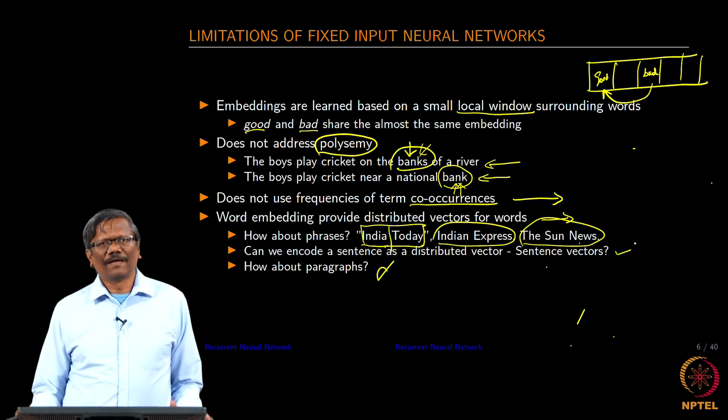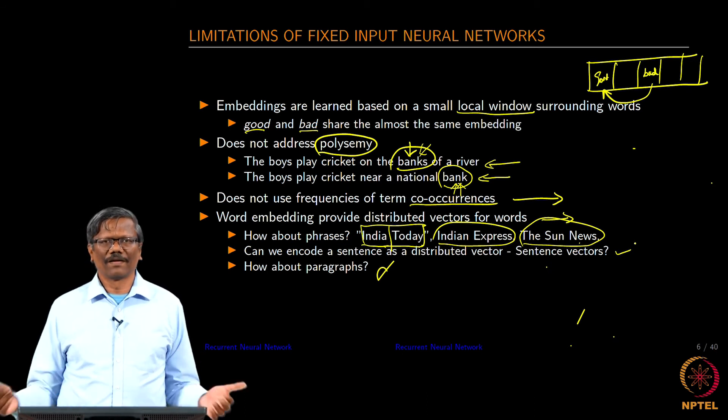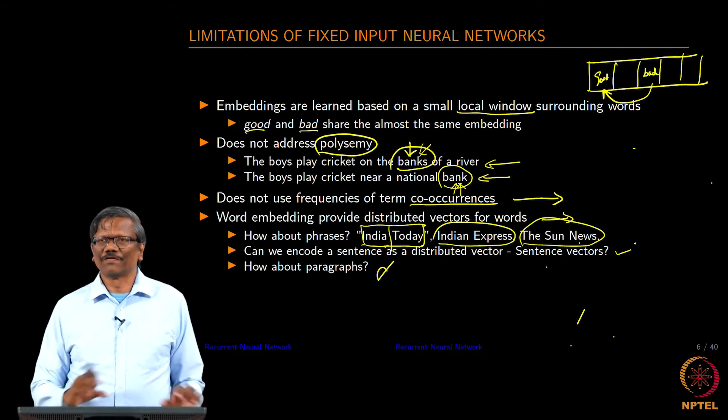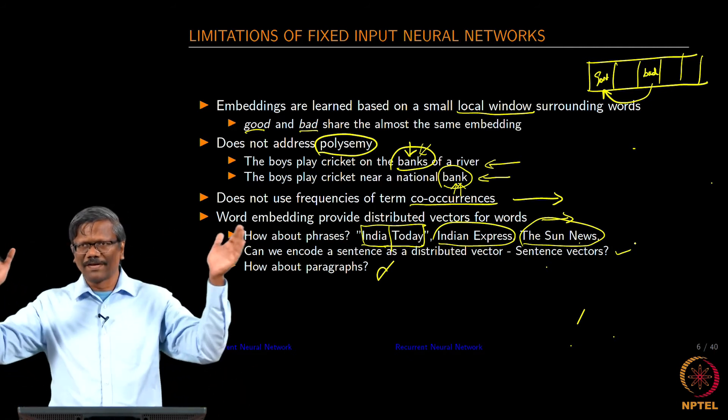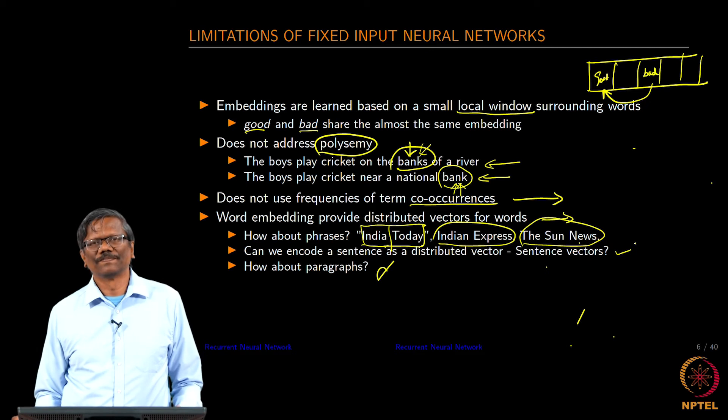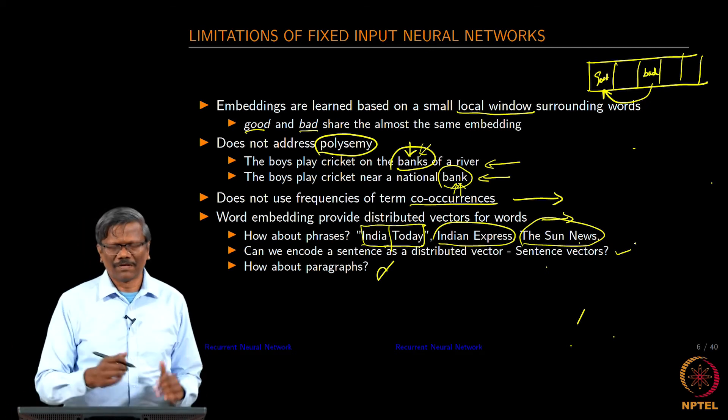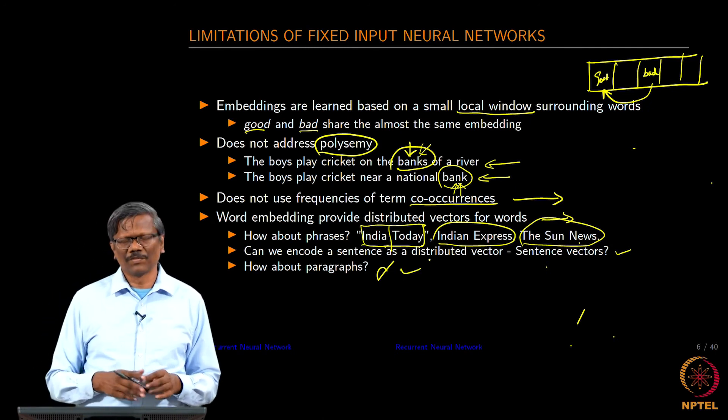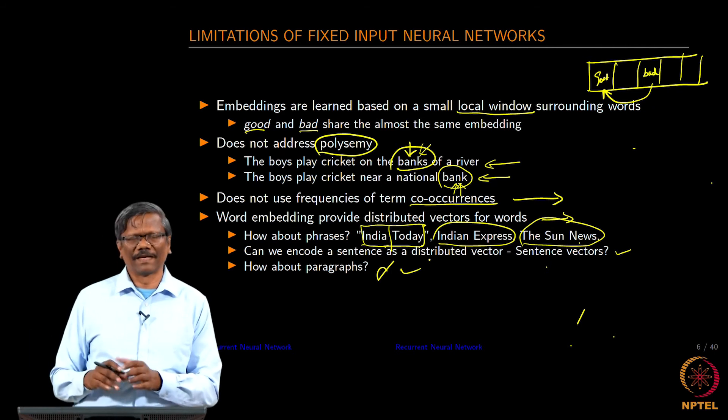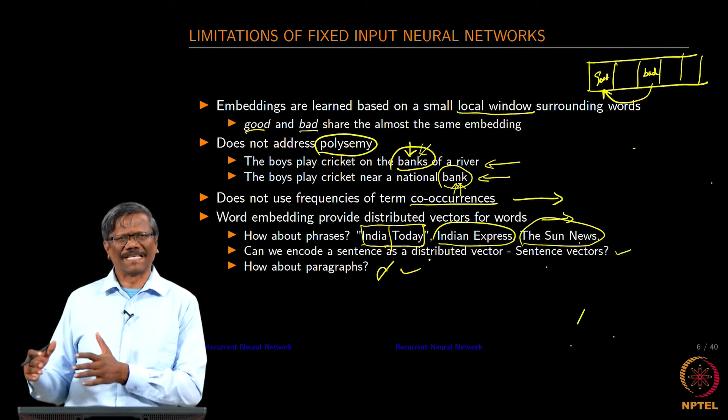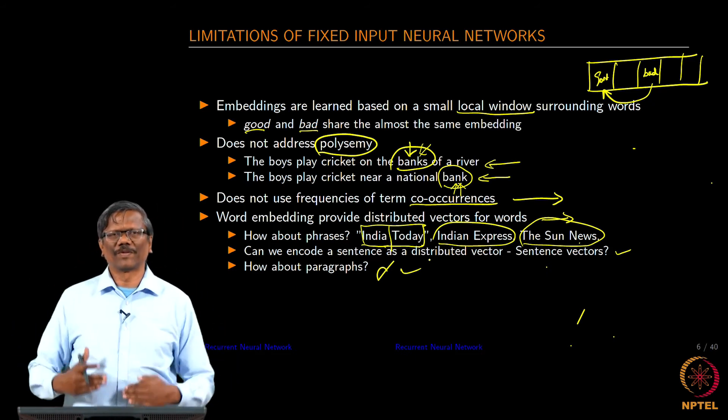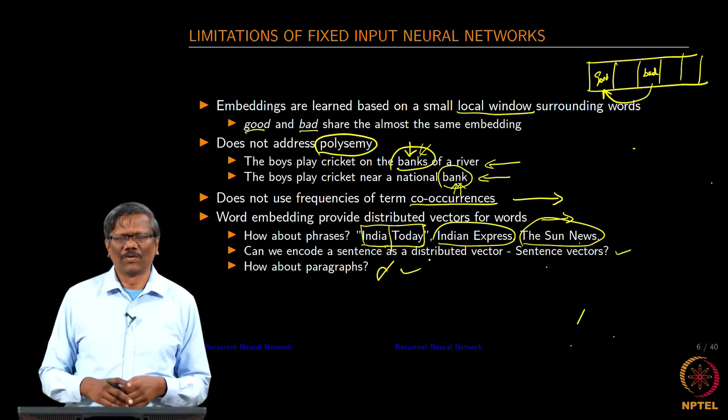Like we have done in the case of the word, can we really create an embedding for a sentence? Suppose if I give a long sentence, can I create a word vector for that sentence? Why is that useful? We will come to that when we talk about the applications. How about a paragraph? Suppose if we want to really identify paragraphs that talk about the same thing in similar context, we should be able to bring them together in one go.